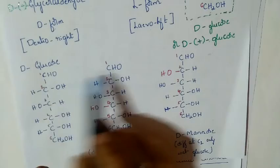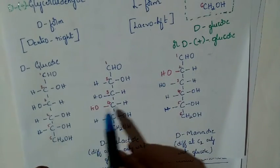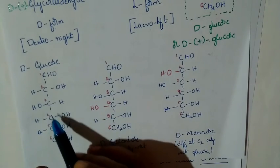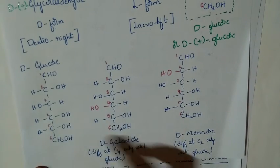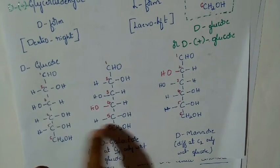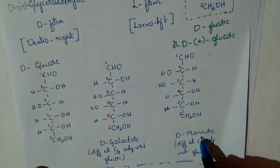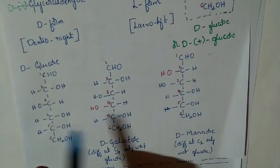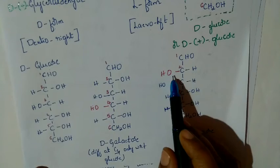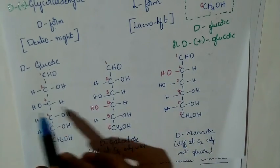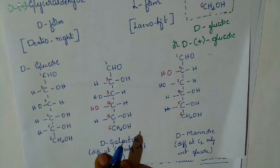Epimers: glucose and galactose differ at carbon 4, so they are epimers at C4. Similarly, glucose and mannose — all other carbons are the same, but the second carbon has OH on the right in glucose and on the left in mannose. The remaining carbon atoms are all similar, so only one chiral carbon differs. Therefore, glucose and mannose are called epimers at C2.